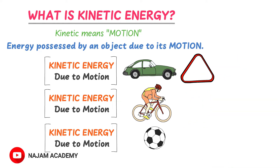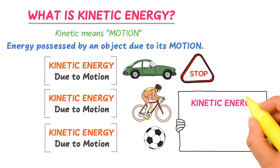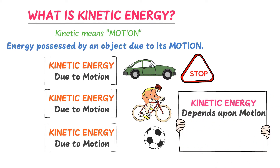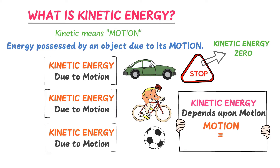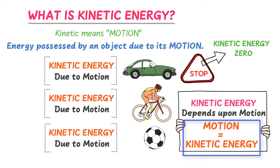What happens to kinetic energy when an object stops, or does a stationary object possess kinetic energy? Kinetic energy purely depends upon the motion of an object. When an object stops, its kinetic energy becomes zero. Remember: when there is motion, there is kinetic energy. No motion means no kinetic energy.